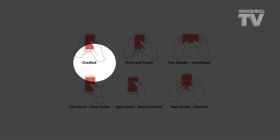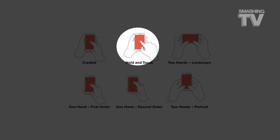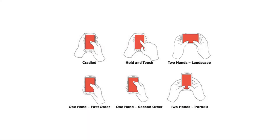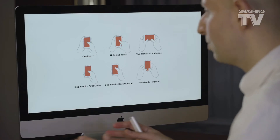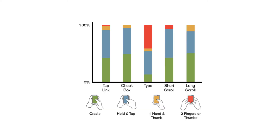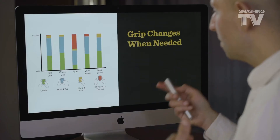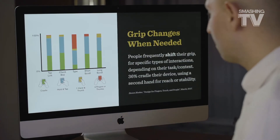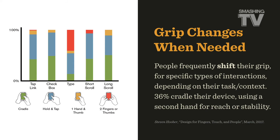We also see other grips: sometimes people cradle the device, sometimes they hold-in-touch, and sometimes they use landscape mode — mostly when playing a video game or watching a video. When typing, people use two-hands portrait. Looking at when people use which grip, it's pretty consistent — we rarely cradle when we type, but we use two thumbs for typing. Grip changes when needed, and people frequently shift grip for specific interactions depending on task and context.